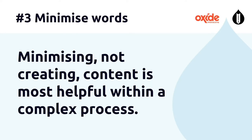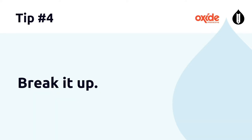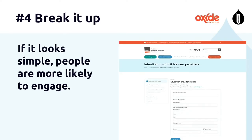Minimizing — not creating — content is most helpful within a complex process. What else can you do? Break it up. You need to break content into manageable chunks so you're not overwhelming your users; doing this might create more clicks and that's okay. For example, we've developed a form for the Australian Nursing and Midwifery Council — currently a single PDF on their website — which we've broken into six steps. That minimizes the amount of content on each screen, creates more clicks, but makes it look simpler, and because it's simpler people are more likely to engage with it.